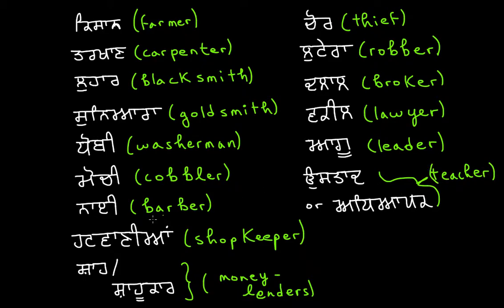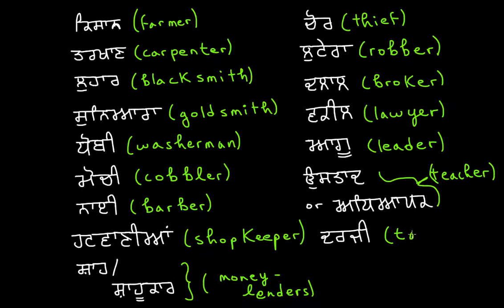Then we want to talk about a tailor. A tailor would be what we call a Darji. It's a Dada, a Rara, a Jaja, and a Bihari — Darji. This would be some individual who works as a tailor.